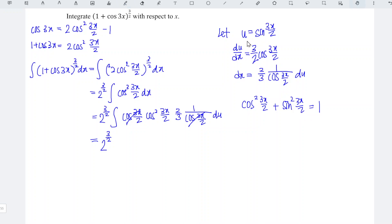Since sine is equal to u, which means that sine squared is equal to u squared, we have cos squared 3x over 2 is equal to 1 minus u squared.